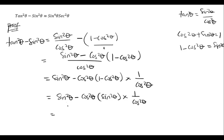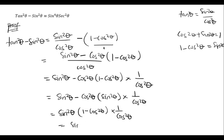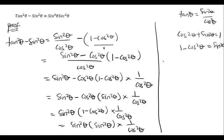From here we can see that sin squared theta is common. We factor out sin squared theta, leaving one minus cos squared theta in the bracket. Expanding: sin squared theta times one gives sin squared theta, minus sin squared theta times cos squared theta gives cos squared theta sin squared theta. We know one minus cos squared theta is sin squared theta again, so we write sin squared theta multiplied by sin squared theta, times one over cos squared theta.